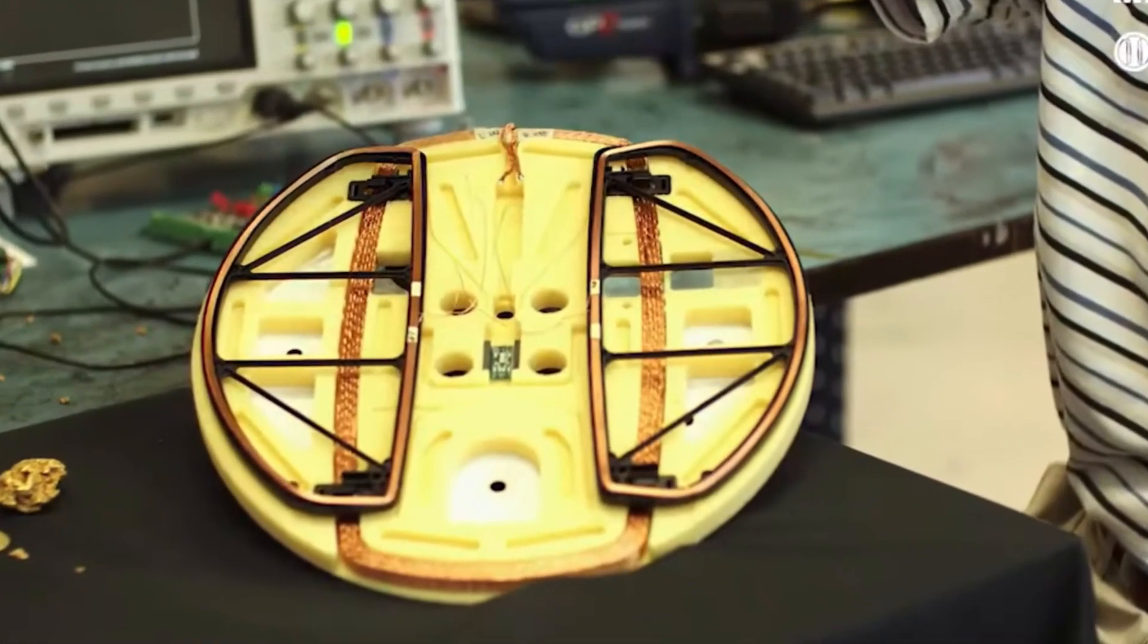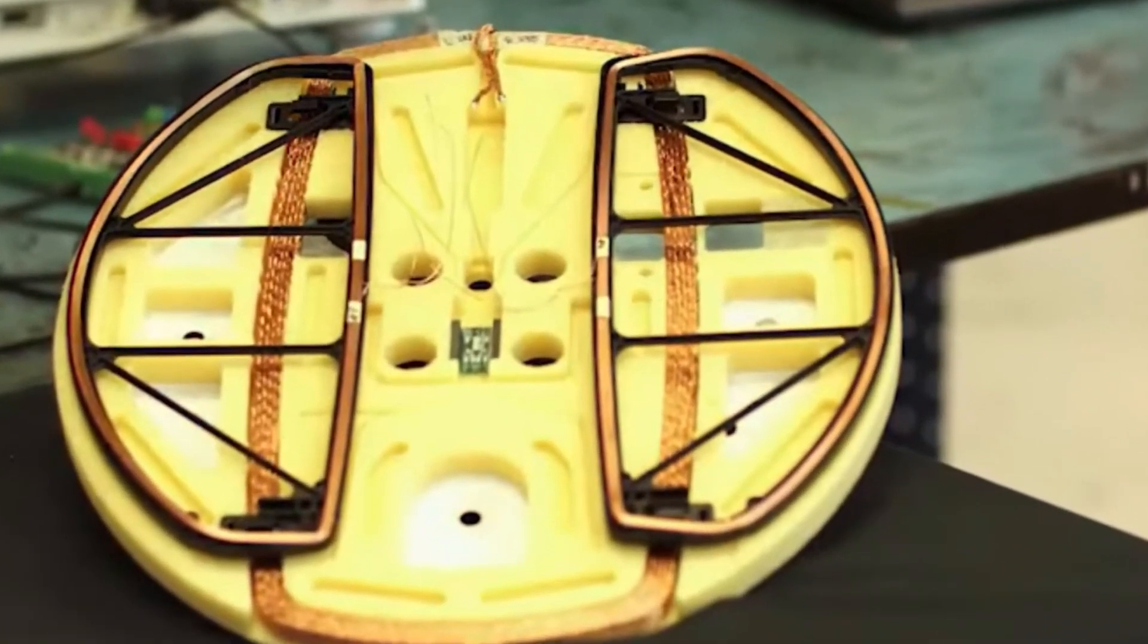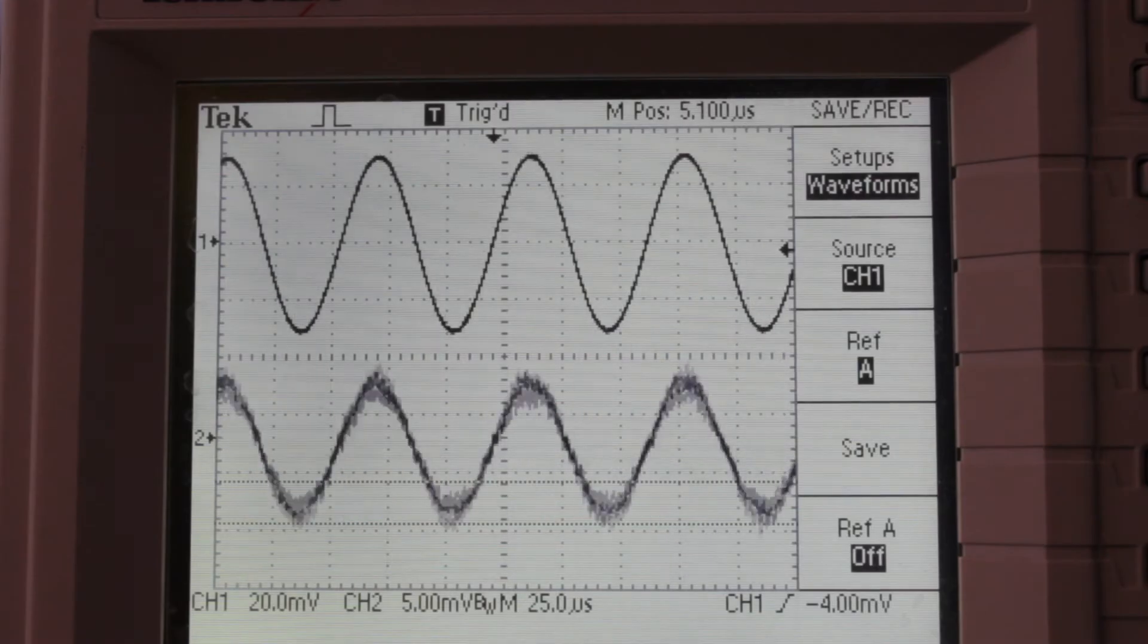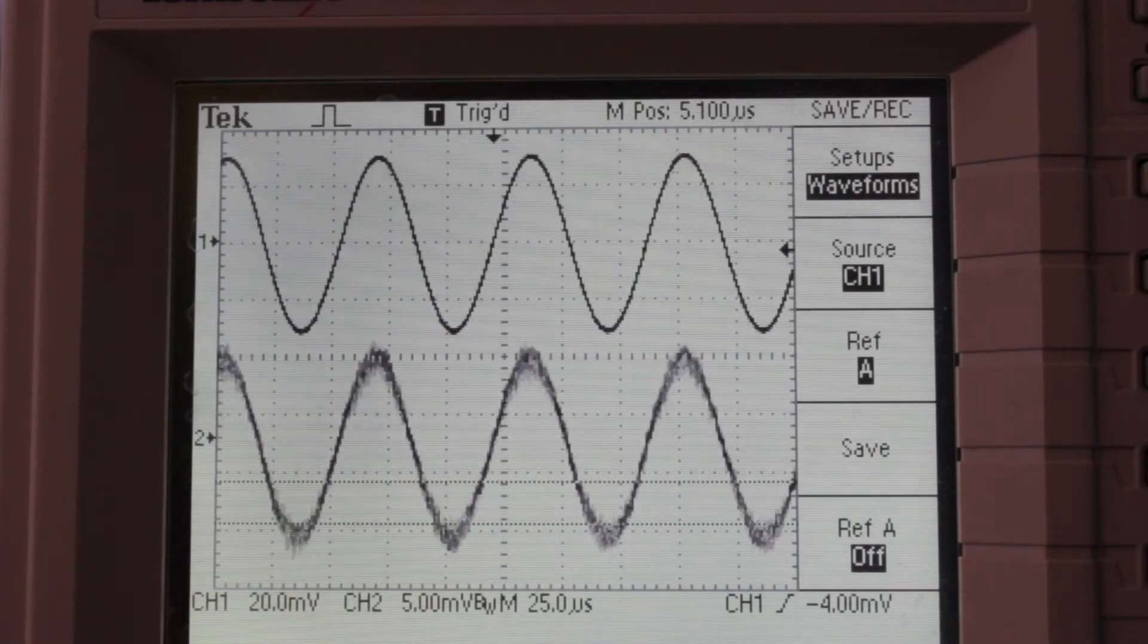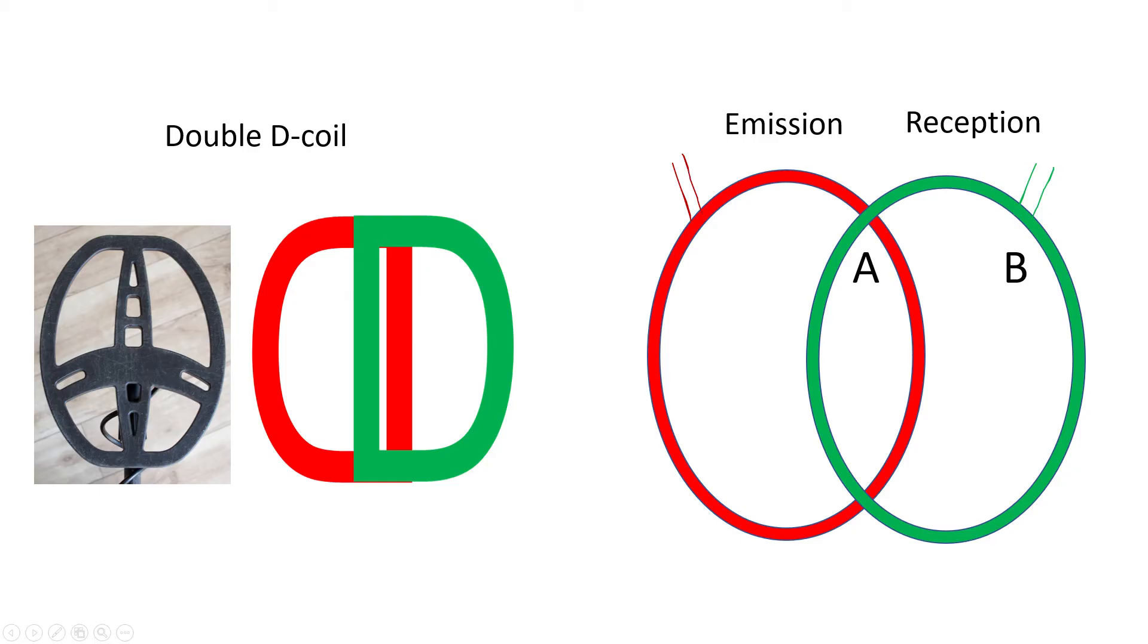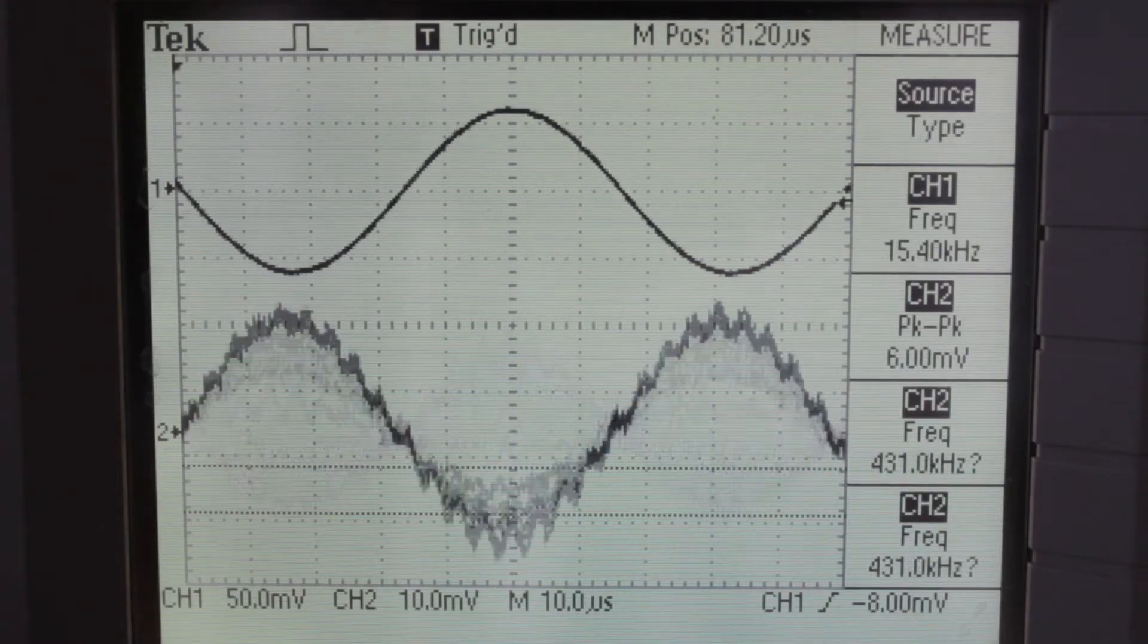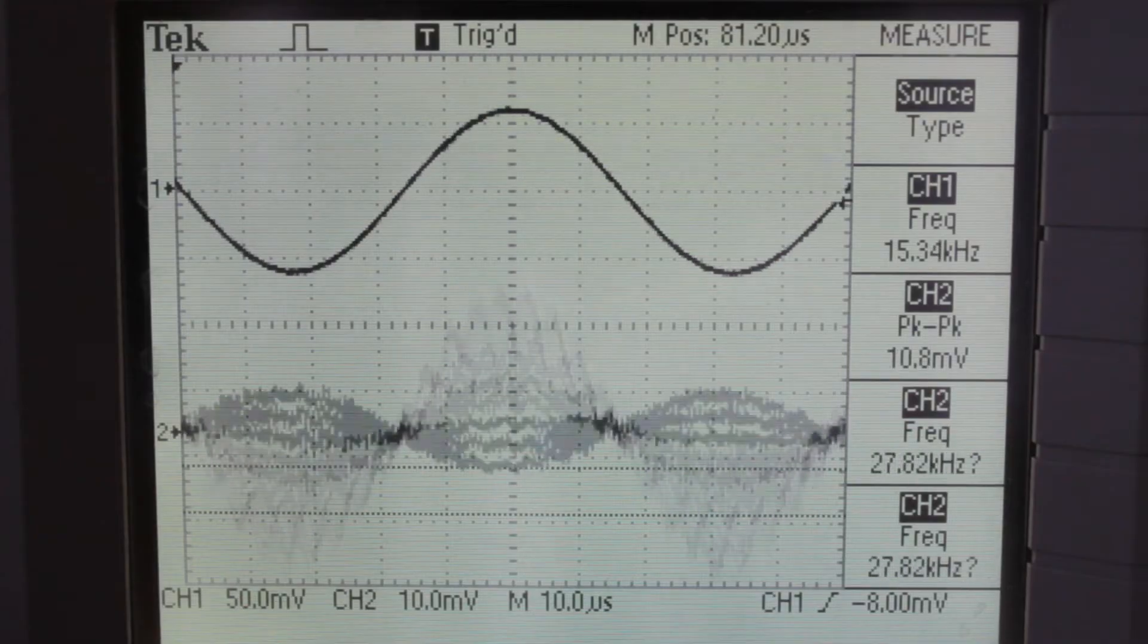High end metal detectors can even have two of these configurations in a single search coil. When a metal object gets in the vicinity of this double D coil, it slightly disturbs the magnetic field and at the same time the fine balance between the magnetic fields in the areas A and B. And this results in a net magnetic flux through the reception coil, which can then easily be detected.